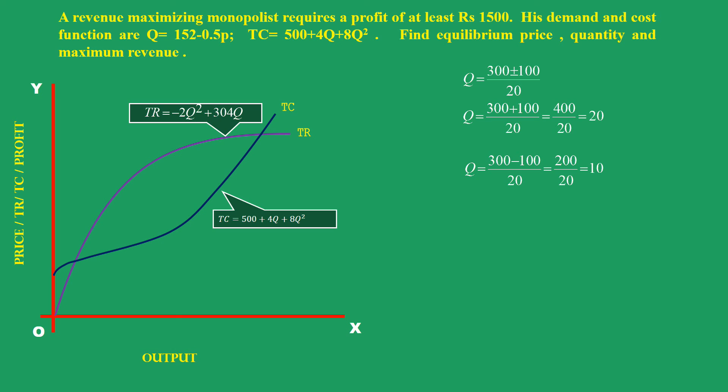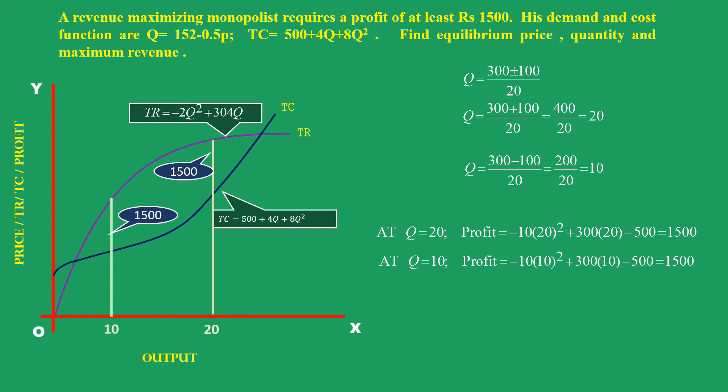The monopolist is able to get 1500 rupees profit at two output levels. At Q = 20, profit is 1500; again at Q = 10, profit is 1500. Which output will the monopolist produce? His aim is to maximize the revenue.